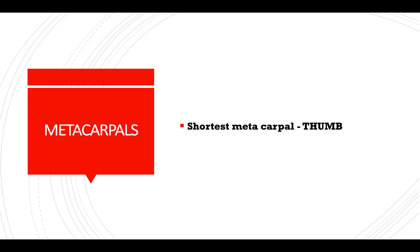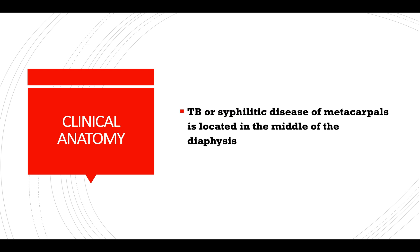Metacarpals: the shortest metacarpal is the thumb. Clinical anatomy: TB or syphilitic disease of the metacarpals is located in the middle of the diaphysis.